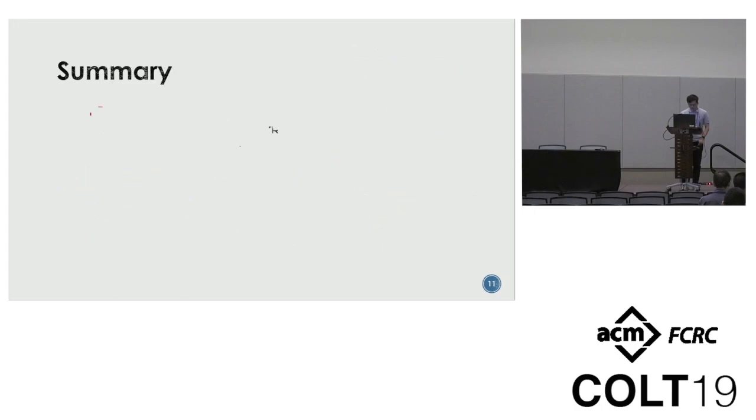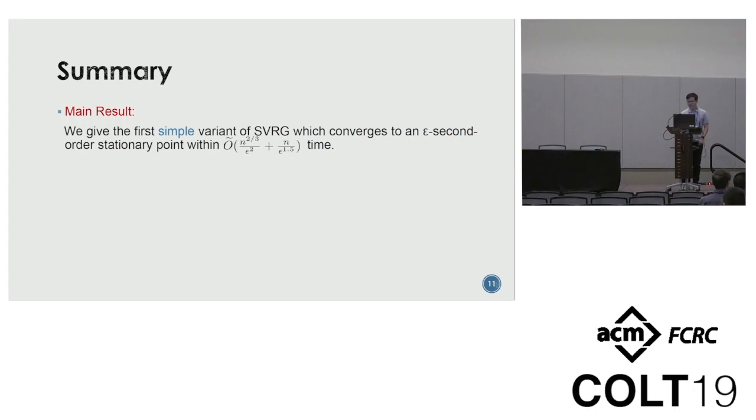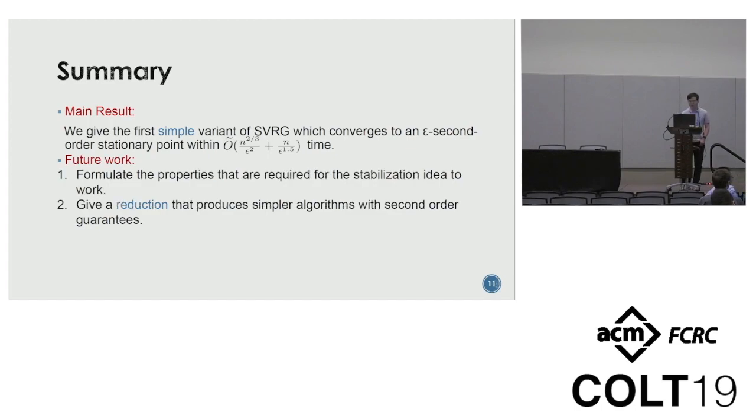In summary, we give the first simple variant of SVRG that can converge to an epsilon second-order stationary point within O(n to the two-thirds over epsilon squared plus n over epsilon to the 1.5). For future work, we hope to formulate the properties that are required for our technique to work and design a reduction that produces simpler algorithms with second-order guarantee. Thank you. The poster number is 180. If you want to know more about this paper, please find me at the poster. Thank you.